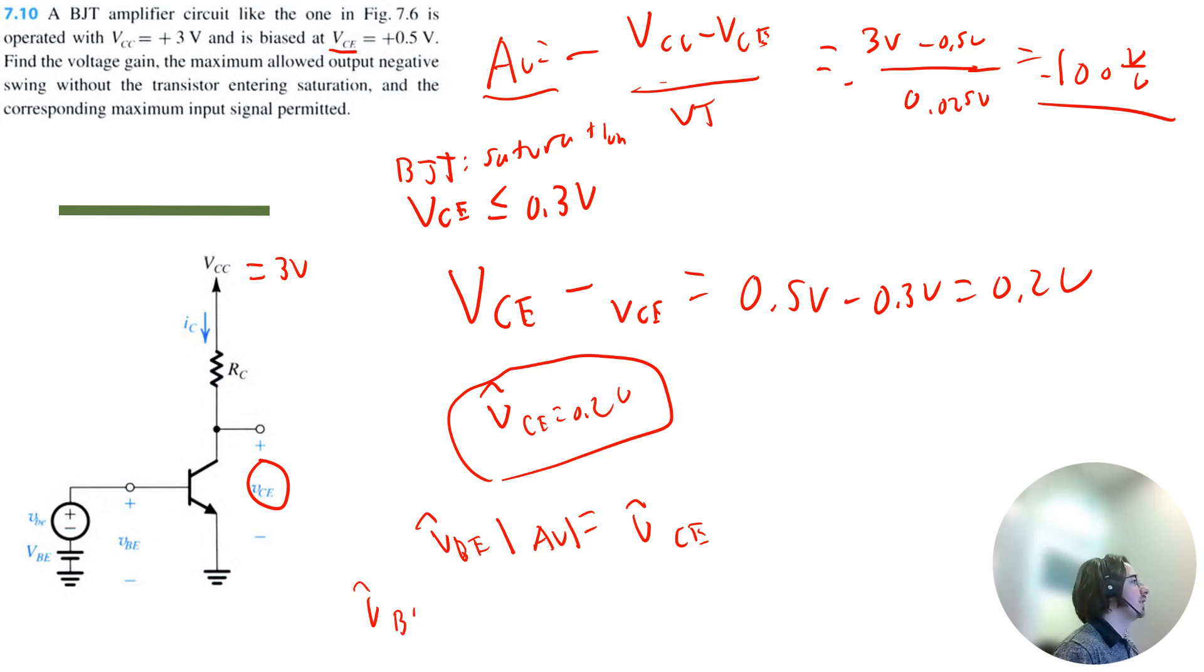So basically, we're just doing VBE equals output swing divided by gain, which is equal to 0.2 volts divided by 100 volt per volt. So when we calculate that, we get 0.002 volts. So that is the maximum input signal we can have, 0.002 volts.